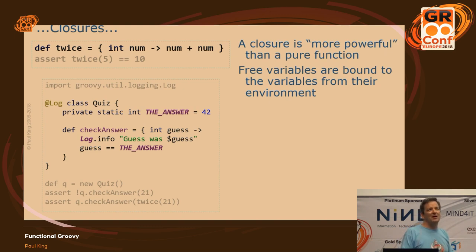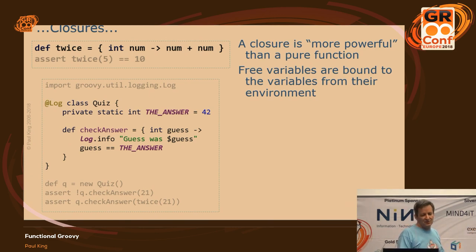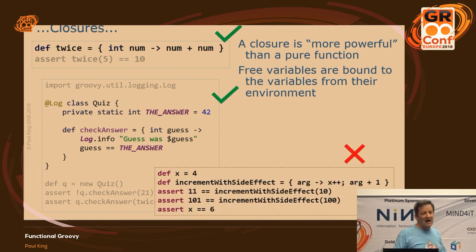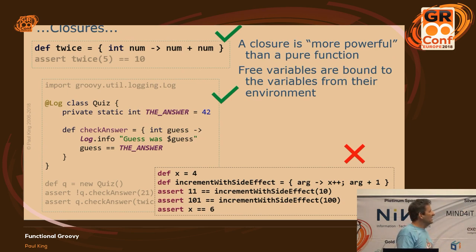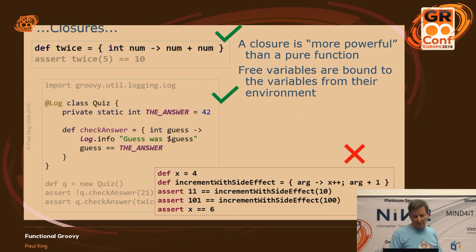What closures do is let you reach out into the environment in which the closure is defined. The log variable is another field inside the class that the @Log annotation gave me. Now, is that evil? It's probably quite legitimate usage of the closure's capabilities — the log and the answer are constants that aren't going to change. But there are other cases. For instance, if I add one to a parameter passed in but also increment some other variable outside my closure's scope, that's a side effect that could be much more difficult to reason about.